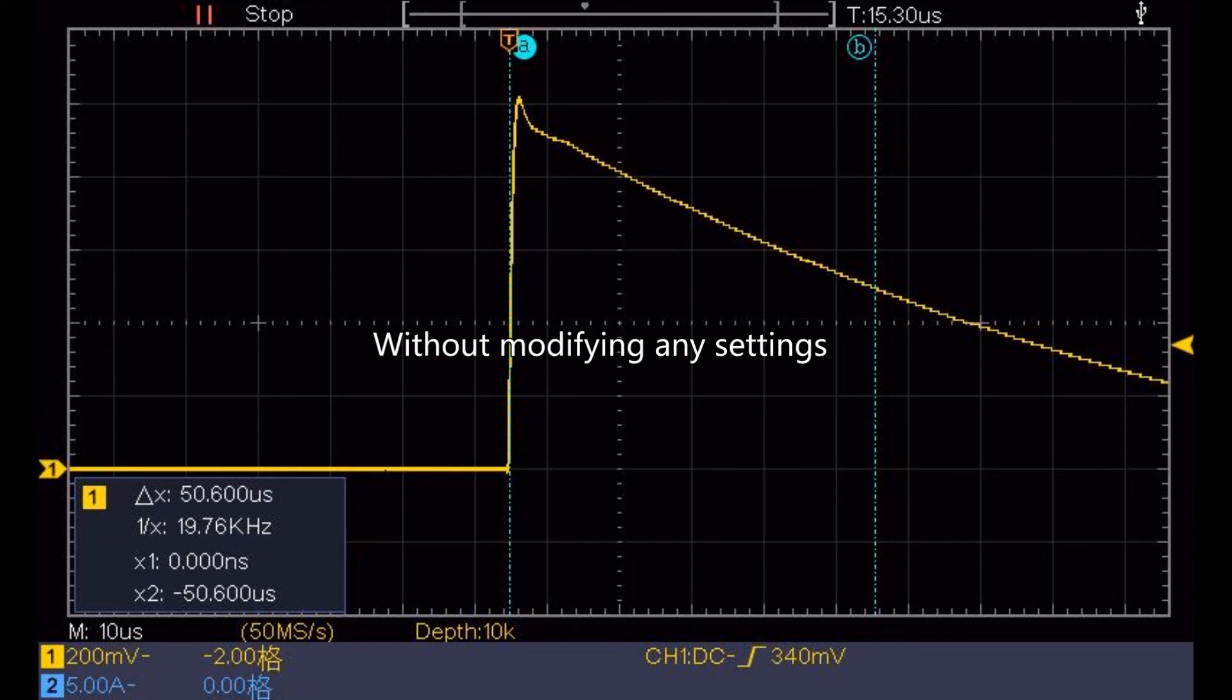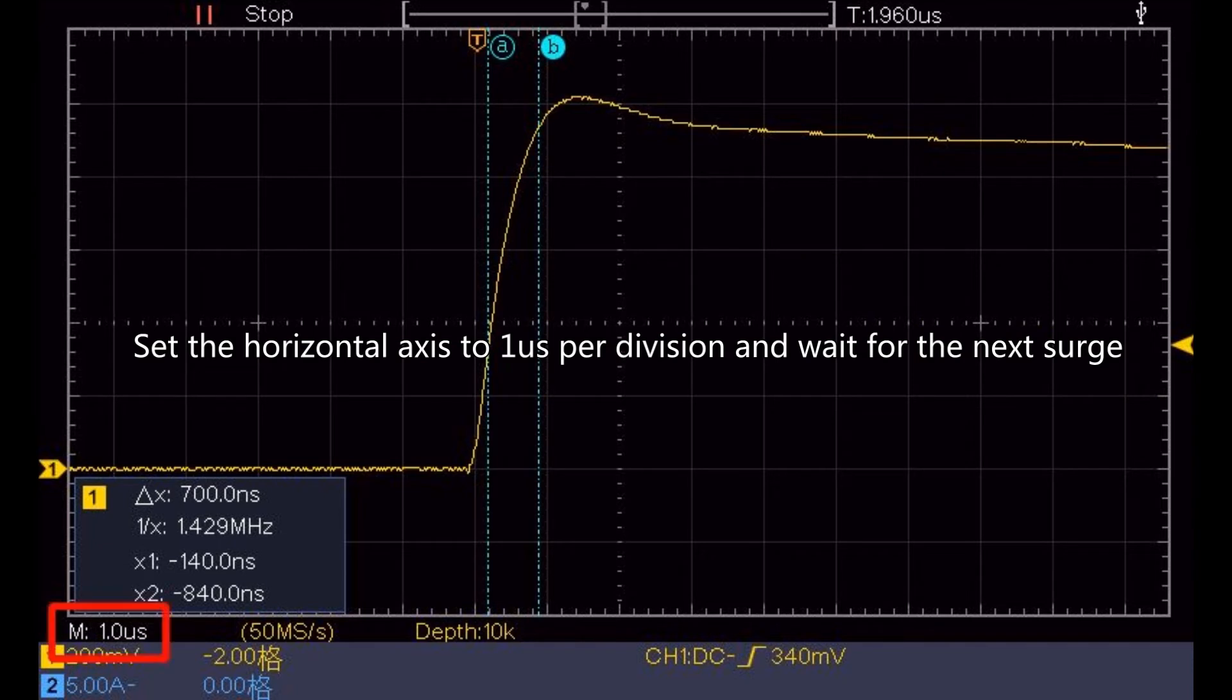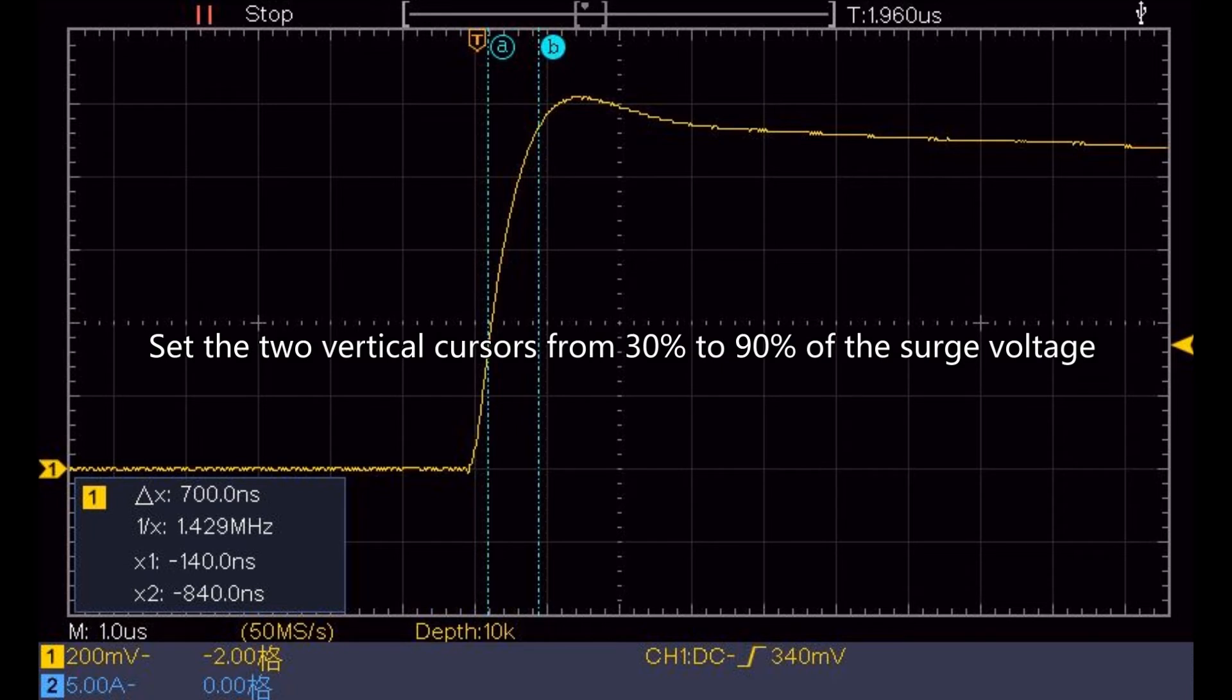Without modifying any settings, use the two vertical cursors to view the time to half value. Set the horizontal axis to 1 microsecond per division and wait for the next surge. Set the two vertical cursors from 30% to 90% of the surge voltage to view the front time.